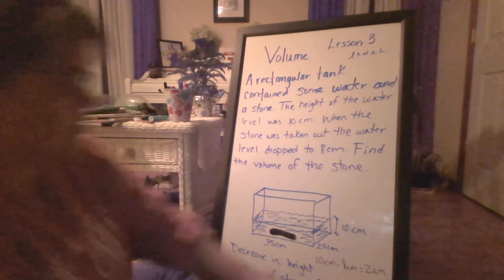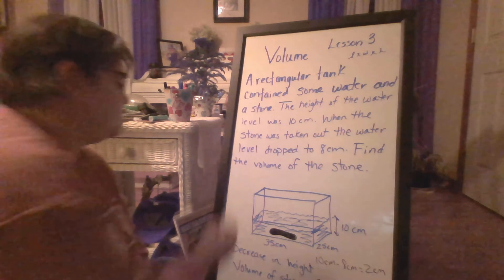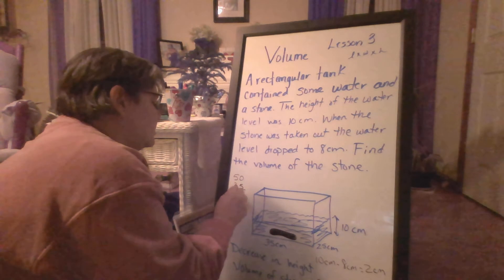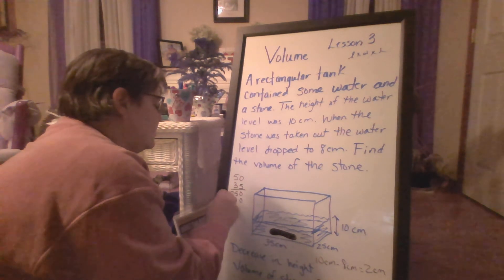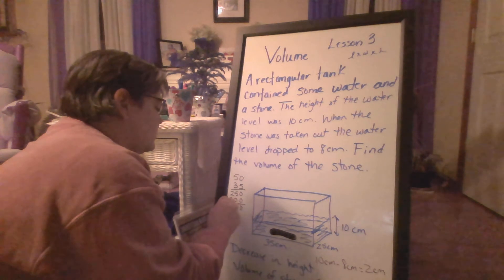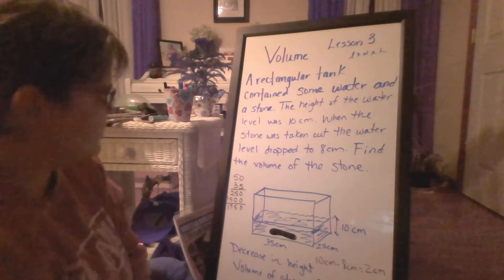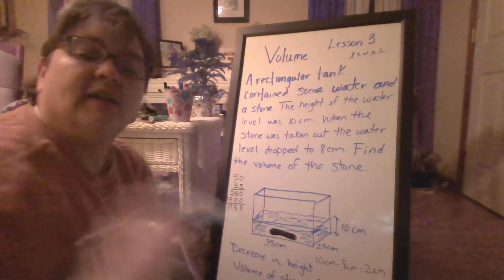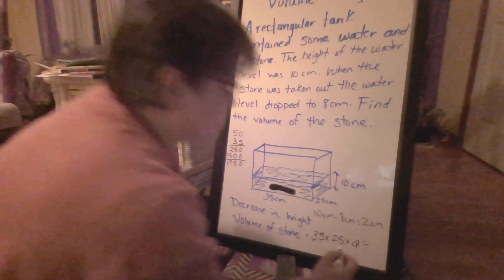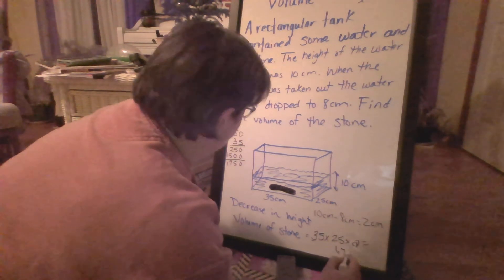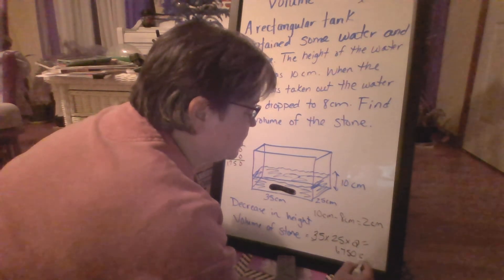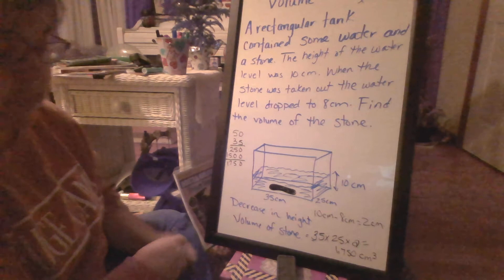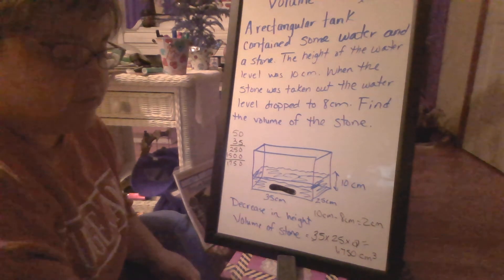We're going to say, okay, what does that equal? Well, 25 times two is 50 and then 50 times 35. Let's see. Coming up with 1,750 cubic centimeters. Now, let's see. It's a lot to see down here. So I'm going to put the answer down here. 1,750 cubic centimeters. All right. So that is how I found the volume of the stone.